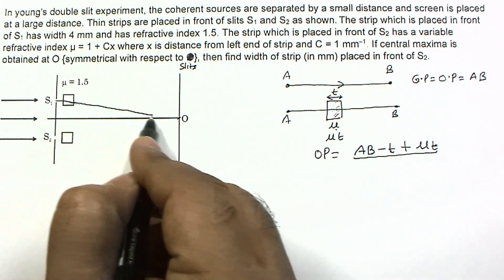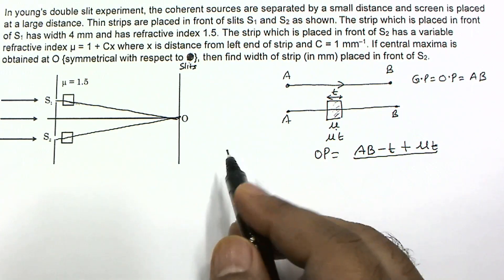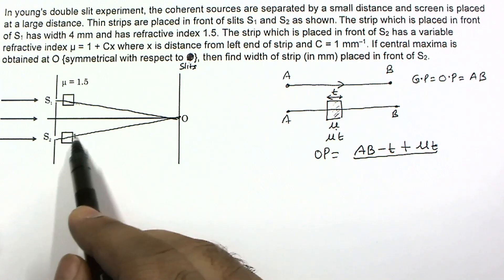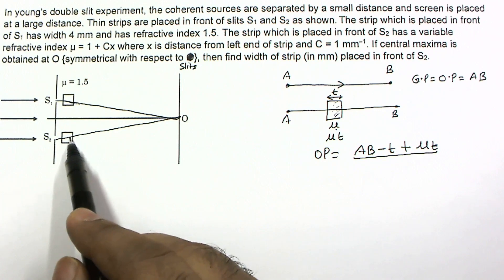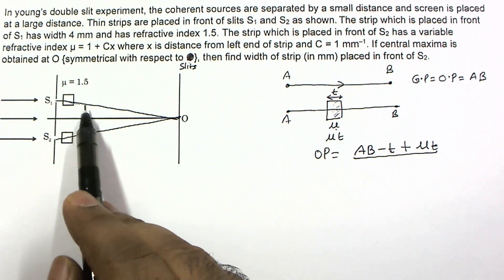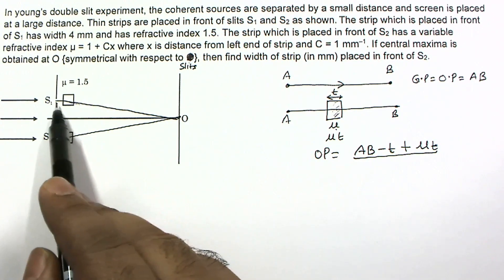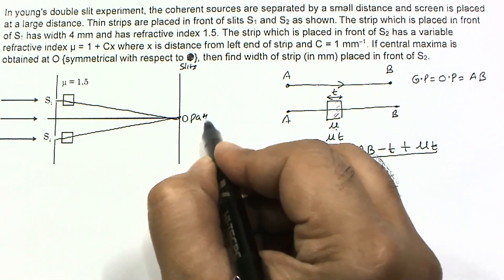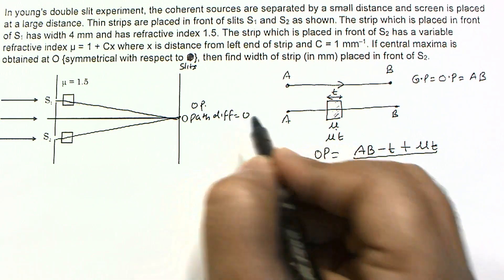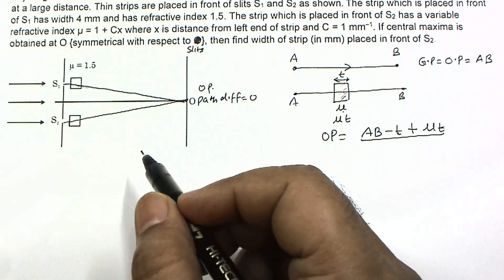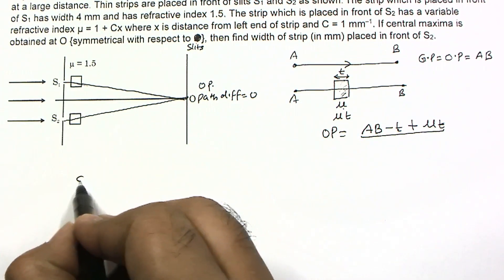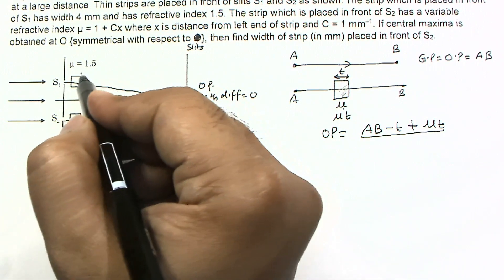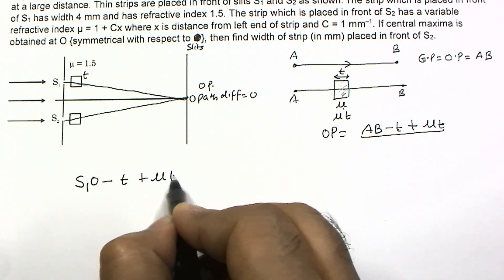For central maximum, the optical path difference must be zero. So the optical path from S1 to O minus the optical path from S2 to O equals zero. The optical path for S1 side is: S1O minus T plus μT, where T is the thickness of the strip at S1 and μ is 1.5.